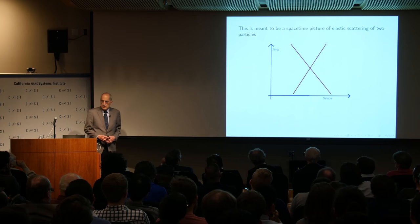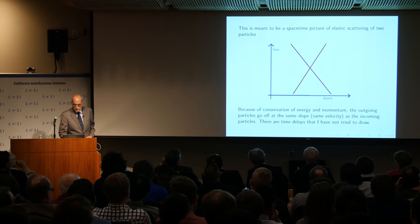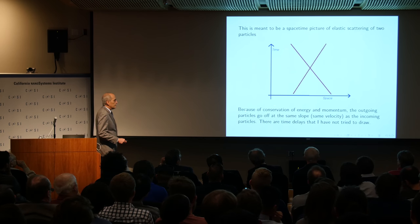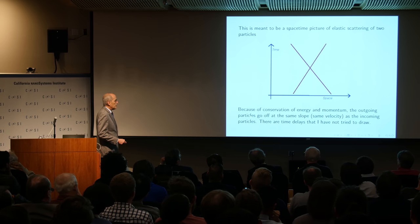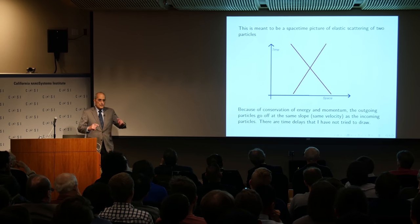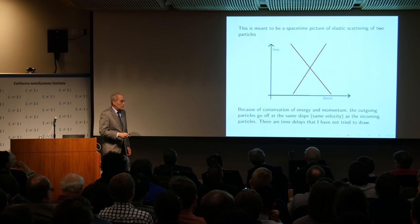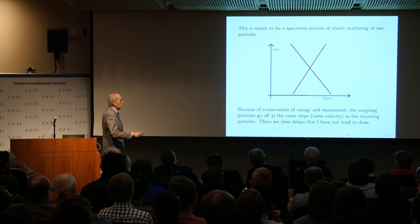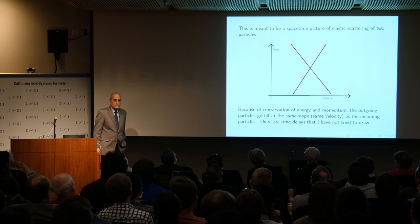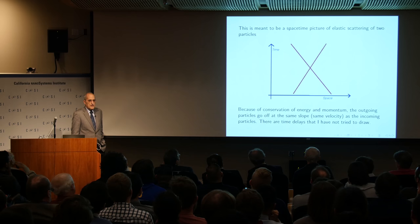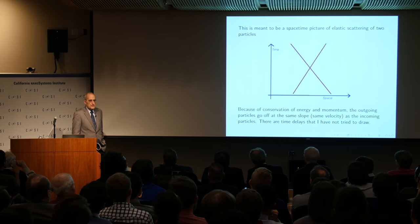Here I have scattering of two particles — elastic scattering. Because of energy-momentum conservation, the outgoing particles have the same slope as the incoming particles. That allows time delays in the scattering, so the outgoing lines should be parallel to the incoming lines but displaced inward. I haven't tried to draw those delays, which won't be important in this lecture, but you should imagine them in all my pictures.